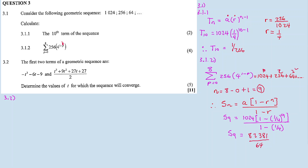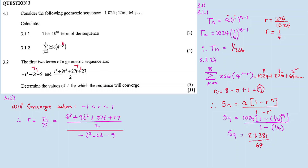Question 3.2: the first two terms of a geometric sequence are -t² - 6t - 9 and (t³ + 9t² + 27t + 27)/2. Determine the values of t for which the sequence will converge. A sequence converges if and only if r is between -1 and 1. The first term is T1, the second is T2, so r = T2 / T1.